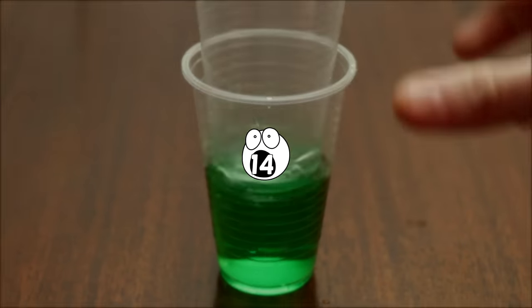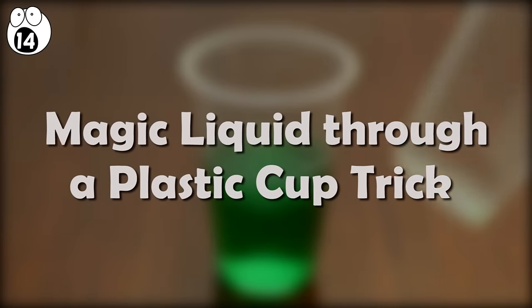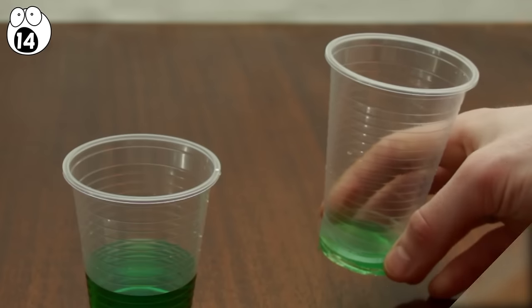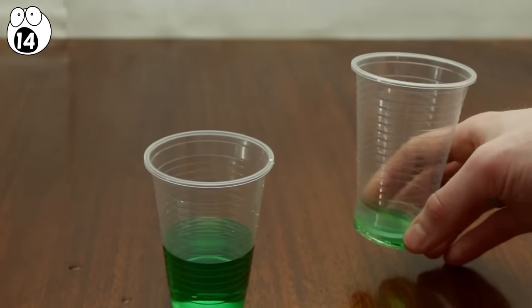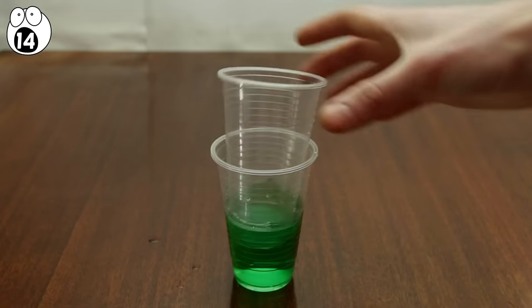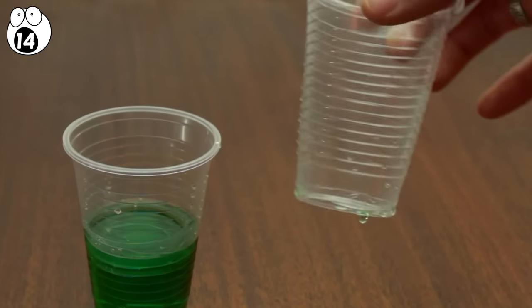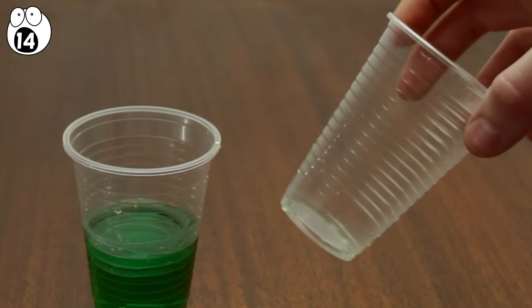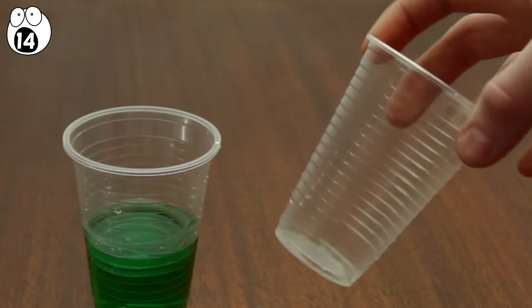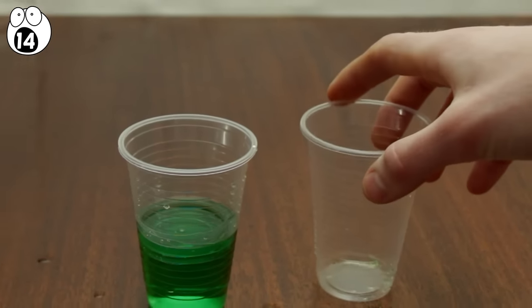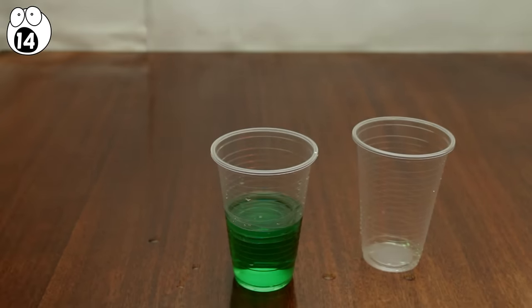Number 14, Magic Liquid Through a Plastic Cup Trick. This is another trick that requires a little bit of advanced preparation. Drop one plastic cup filled with liquid, preferably colored liquid, into the other one, and, if your powers are working to full capacity, the liquid from the first cup should magically appear in the second one, as if the liquid has passed right through the first cup.